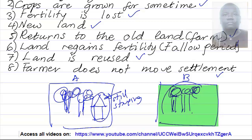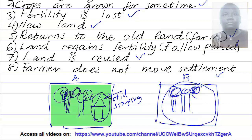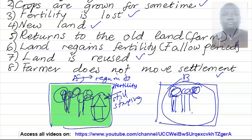He doesn't move his settlement from land A to land B. It is only the farming he goes to do on land B. After some time, land A will regain its fertility. After land A regains its fertility, the farmer then moves back from land B to land A and reuses it again for farming.